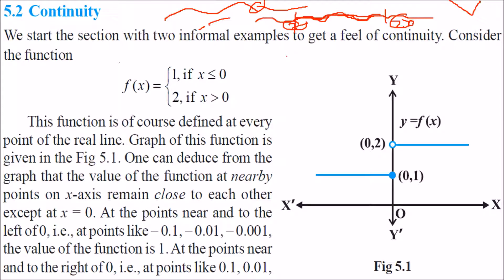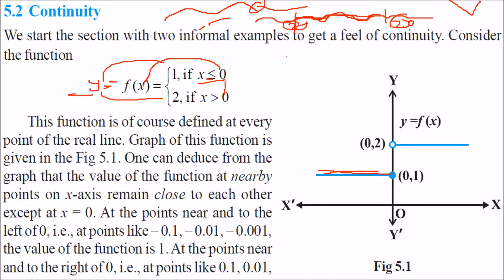Now let us take some informal examples. We have f(x) = 1 if x ≤ 0, and f(x) = 2 if x > 0. If I put 0 or less, y equals 1. If I put values greater than 0, y equals 2. Now let us look at the nearby areas when x is close to 0 for these two pieces.